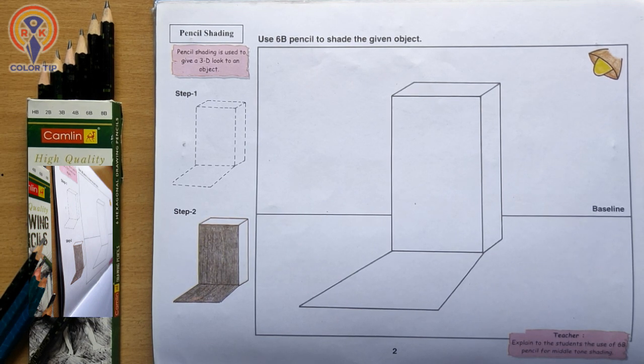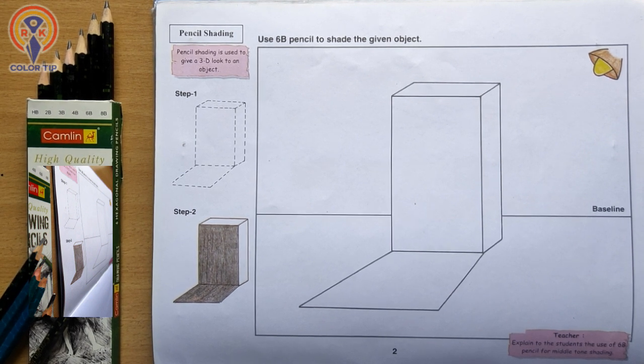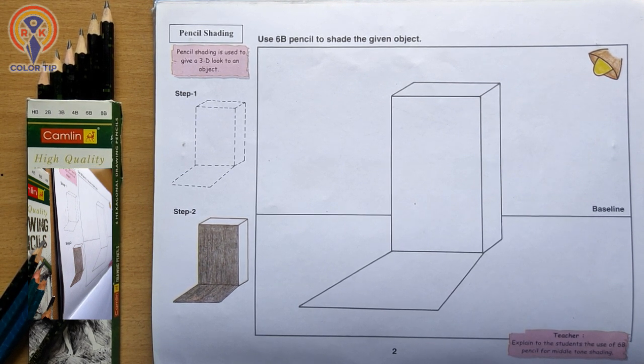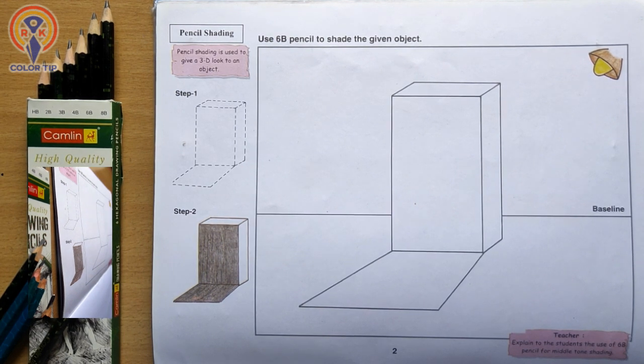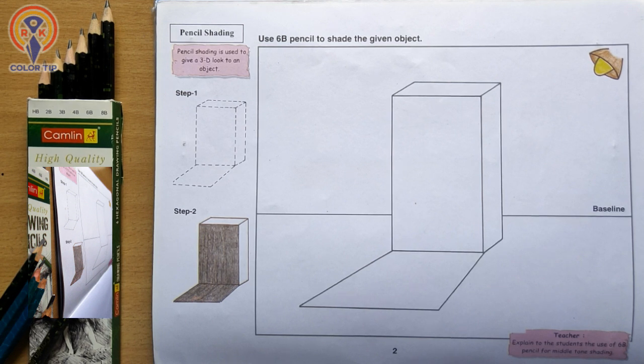Step-by-step level 4, lesson number 2: pencil shading. Use 6B pencil to shade the given object. Do you know why we shade objects generally? It's just a simple thing - shading is used to give a 3D look to any object. It can be a pencil shade or it can be a color shade. So here one object is given.